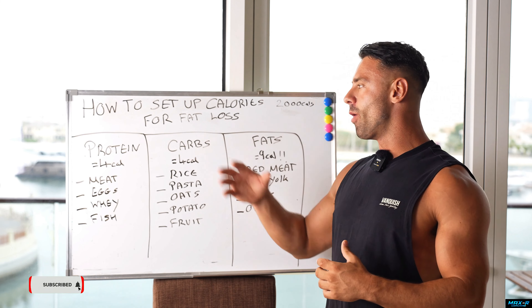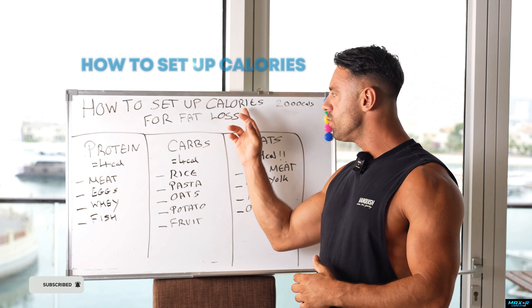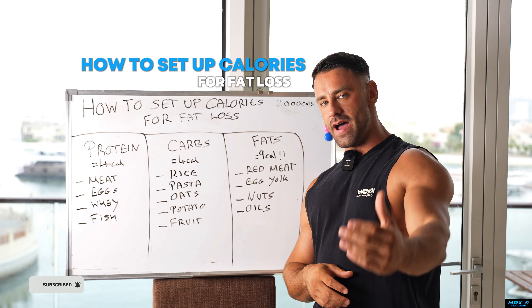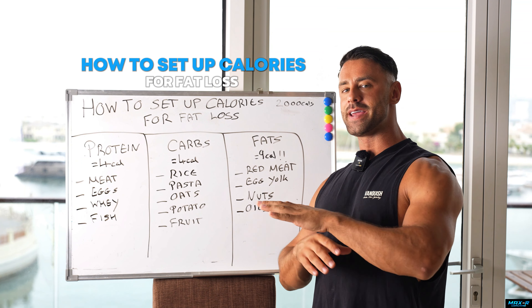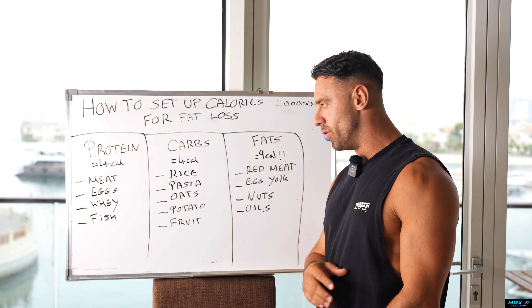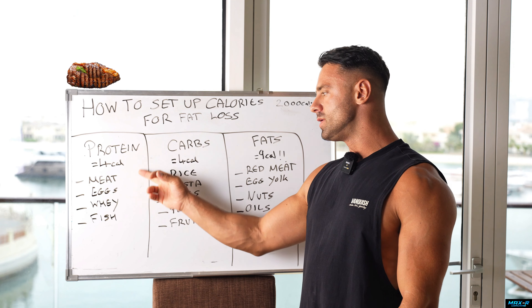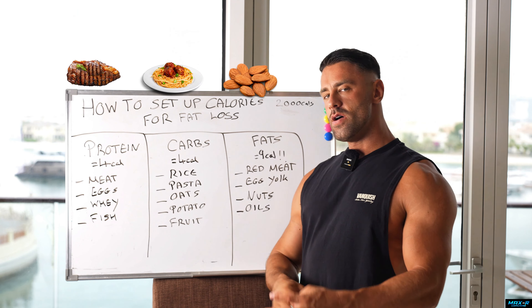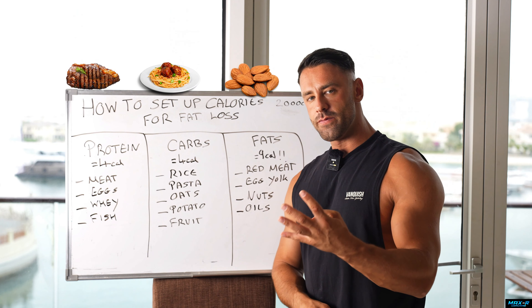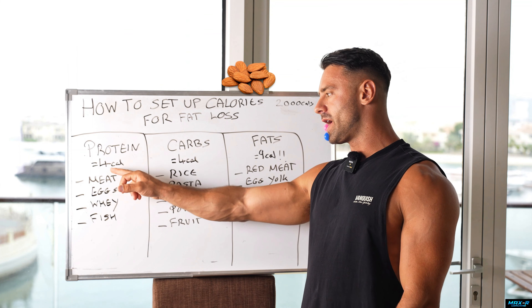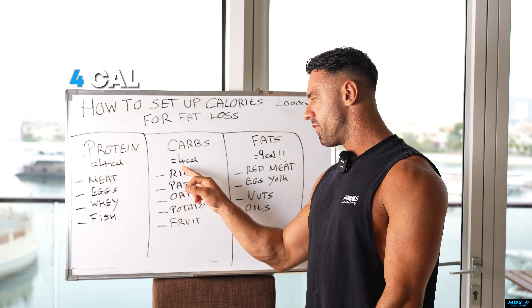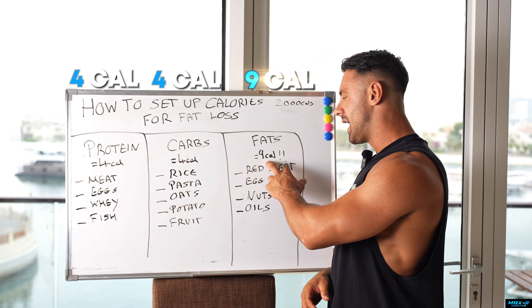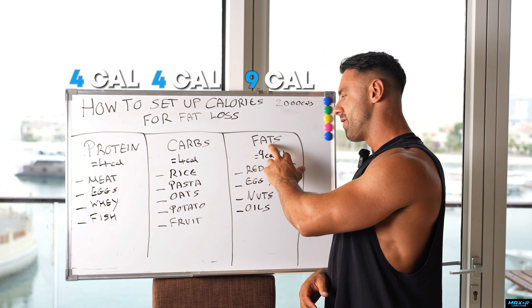In today's video, I'm going to be going over how to set up your calories for fat loss. I'm going to try and break it down and make it very simple. As you can see here, we have protein, we have carbs, we have fats. You may have heard of 4-4-9 before. There are four calories in a gram of protein, four calories in a gram of carbohydrates, nine calories in a gram of fat.